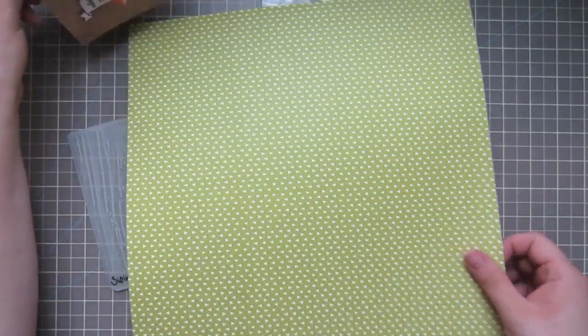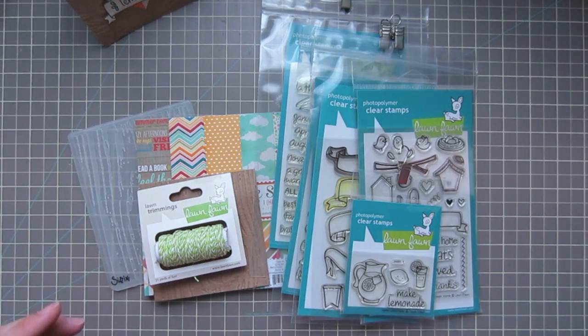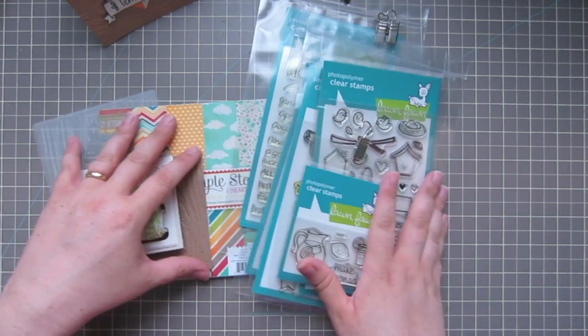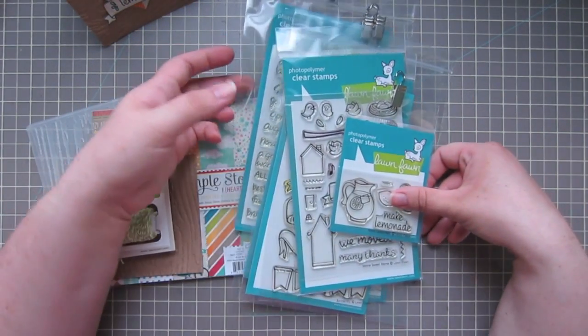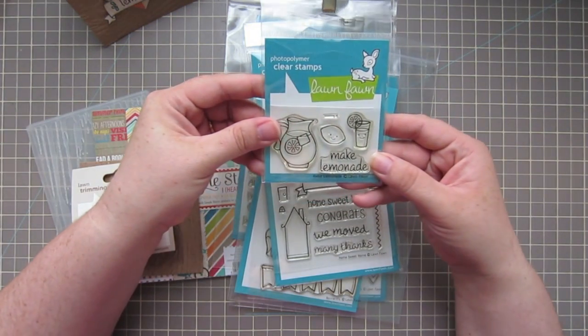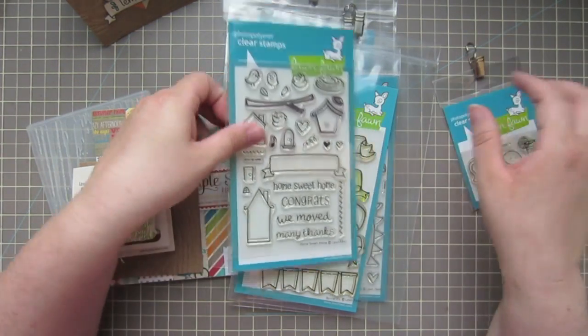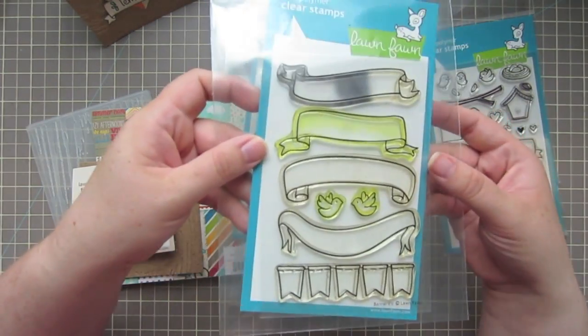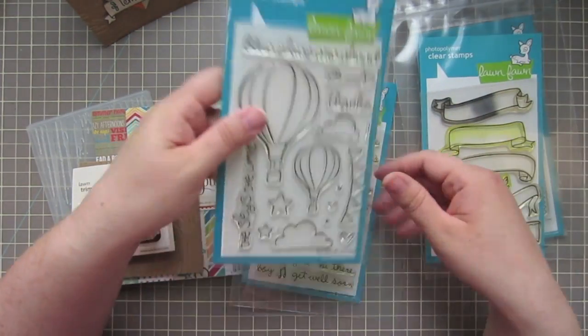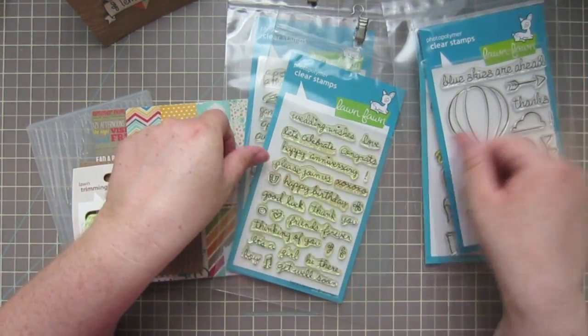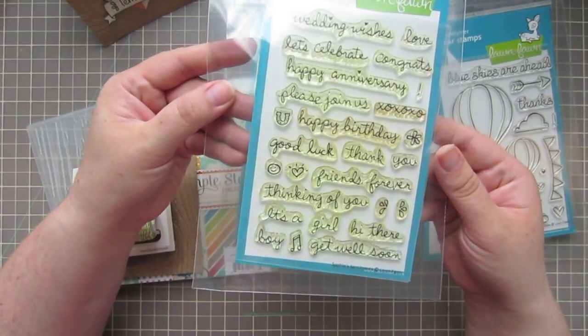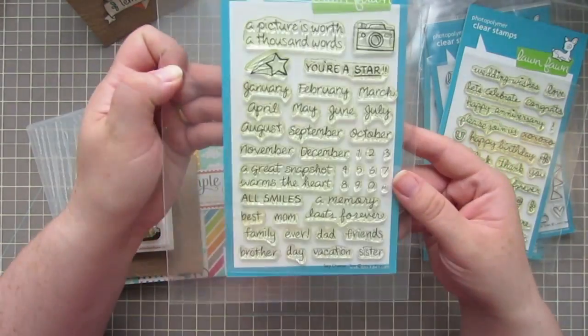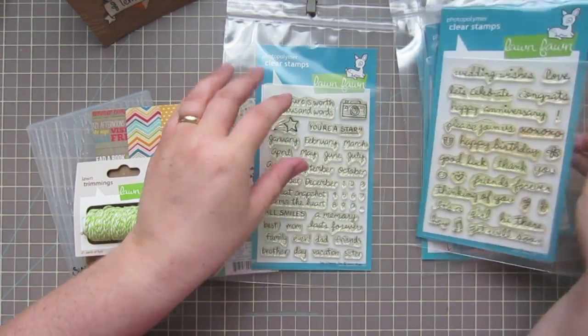To begin, I'm going to be using a whole bunch of lawn fawn stamps. The ones that I used are Make Lemonade, Home Sweet Home, Bannerific, Blue Skies, Sophie Sentiments, and Say Cheese Too.